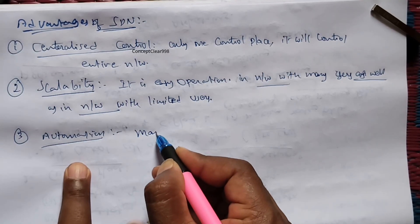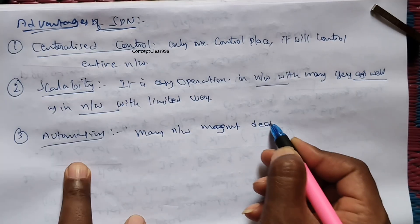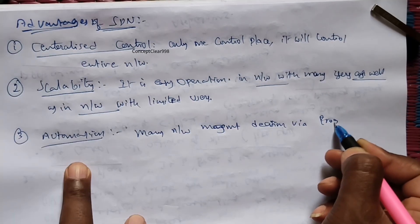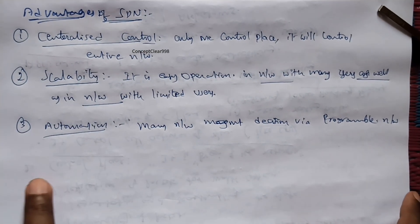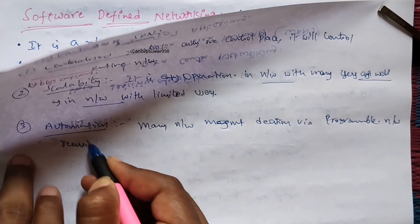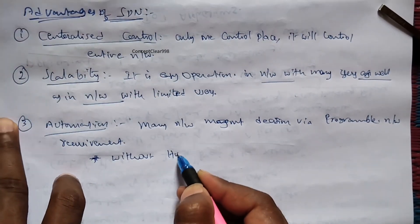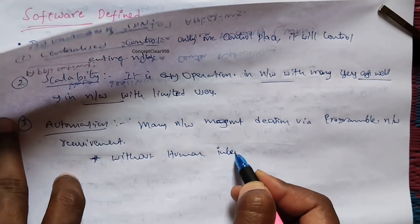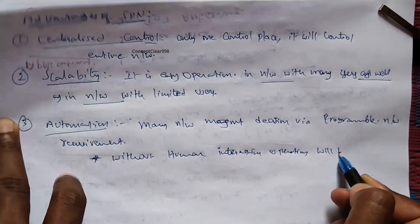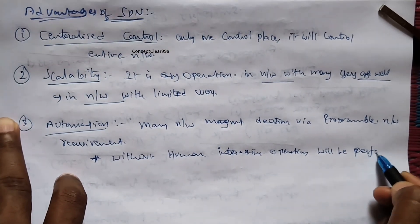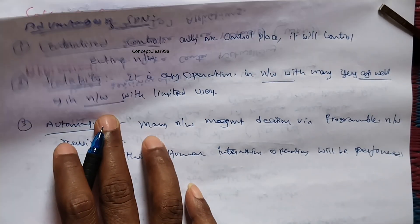With automation, network management and operations will be performed without human interaction, controlled by a similar control plane. This concludes the overview of traditional versus SDN network concepts.